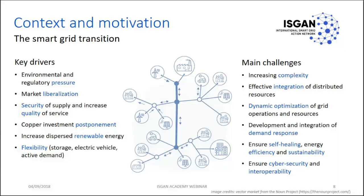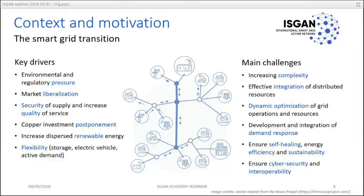In order to manage so many non-programmable and non-dispatchable energy sources, we need a lot of system flexibility — much more than in the past. We should move away from the old generation-following paradigm. Flexibility with storage, electric vehicles as another kind of storage, and active demand participation all require SmartGrid in place. The challenge is that complexity is increasing: we need to integrate distributed energy resources, dynamic optimization of grid operation, demand response, more reliable and resilient systems, and increased cyber security and interoperability.